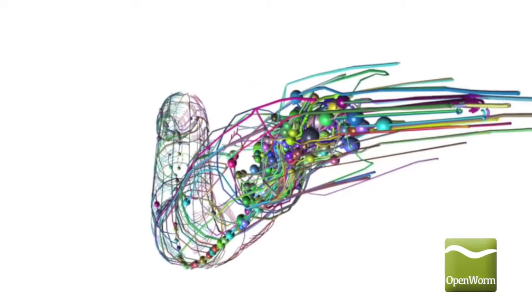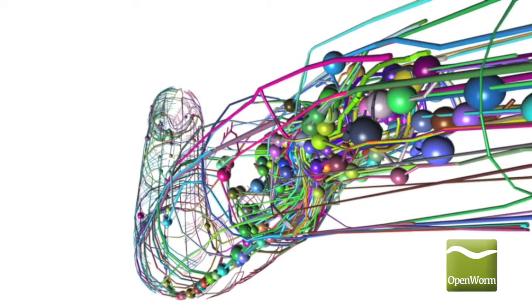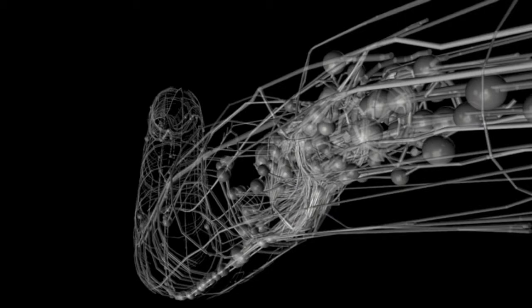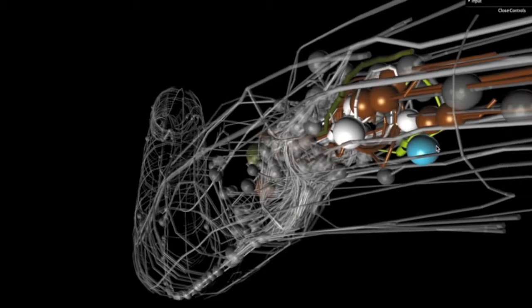However, as a result of its simplicity, transparent nature, and well-characterized cell lineages, the entire pattern of neuron connections, or connectome, of C. elegans has been mapped.